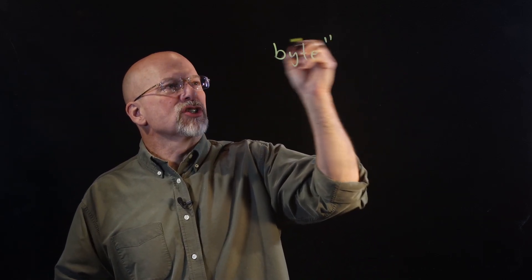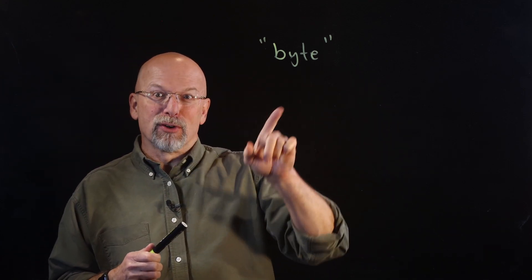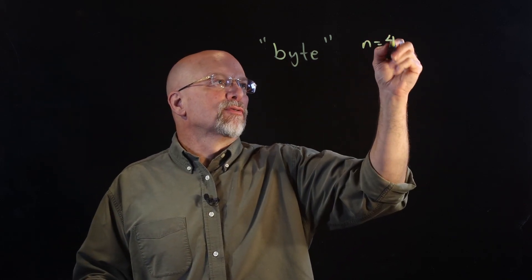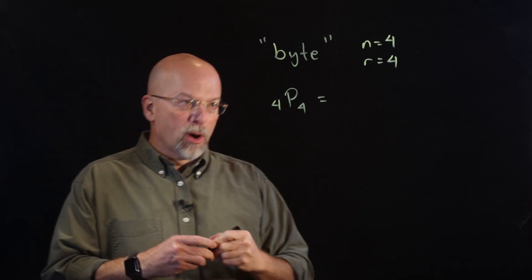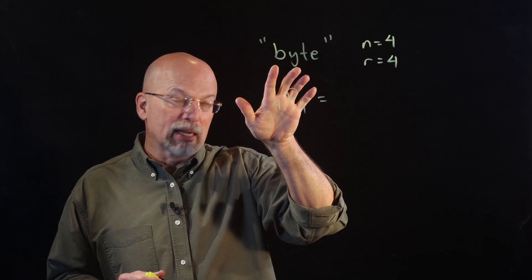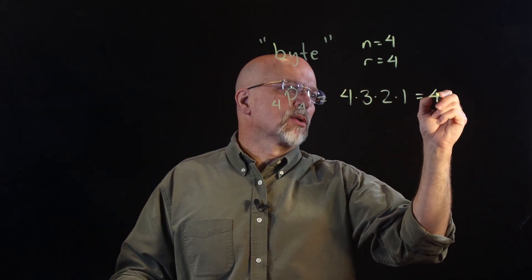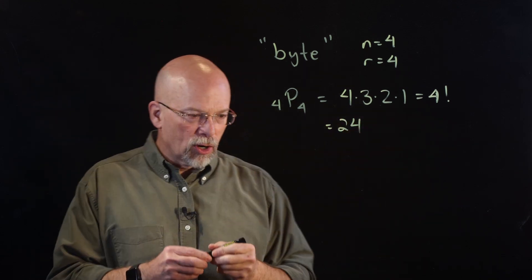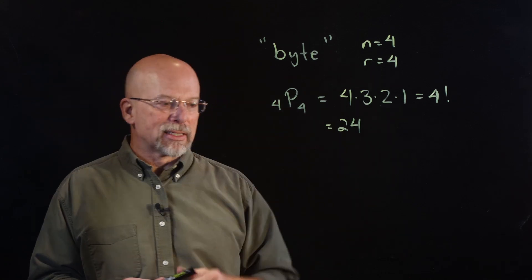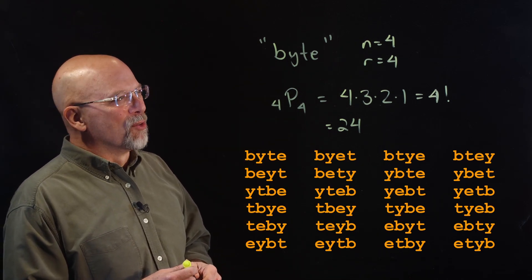Let's use our formula to find the number of ways we can arrange the letters in the word 'byte' (B-Y-T-E). Here n equals 4 and r equals 4, so we're looking at 4P4. We have four options for the first character, three for the second, two for the third, and the last is already determined. That's 4 × 3 × 2 × 1 = 4! = 24. So there are 24 arrangements of the word 'byte.'